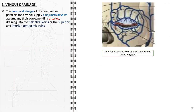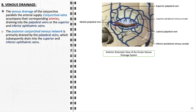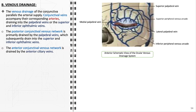The venous drainage of the conjunctiva parallels the arterial supply. Conjunctival veins accompany their corresponding arteries, draining into the palpebral veins or the superior and inferior ophthalmic veins. The posterior conjunctival venous network is primarily drained by the palpebral veins, which subsequently drain into the superior and inferior ophthalmic veins. The anterior conjunctival venous network is drained by the anterior ciliary veins.